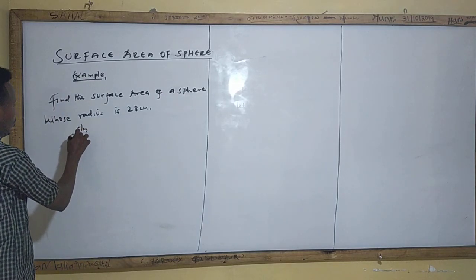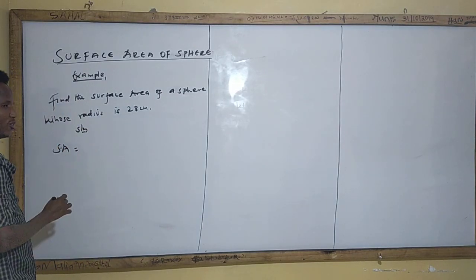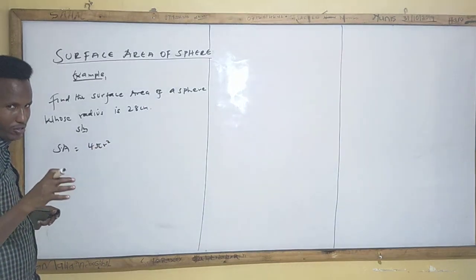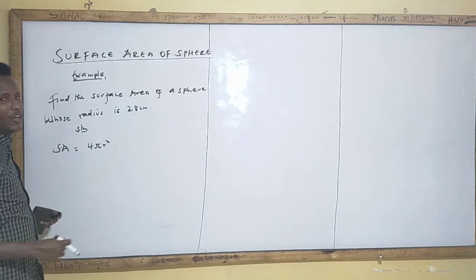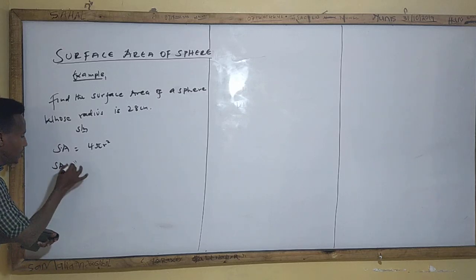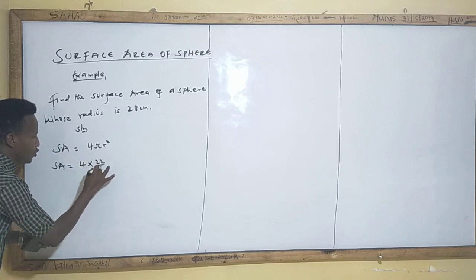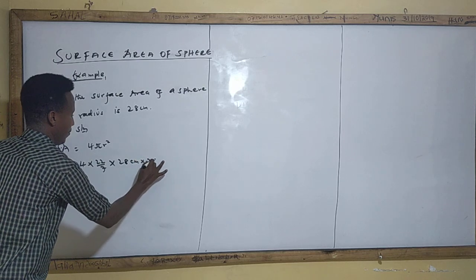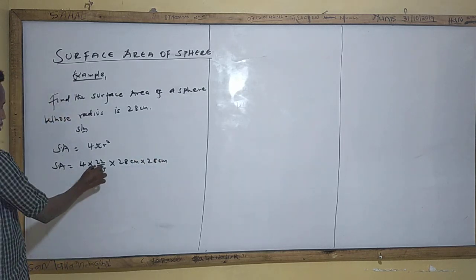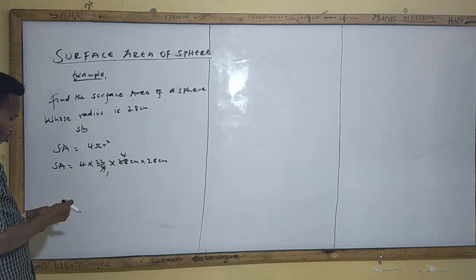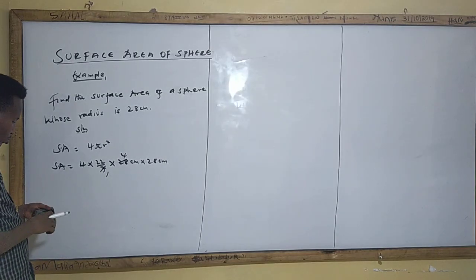Coming to the solution, we know that surface area SA is equal to 4πr². So far we have four concentric circles, then we say 4πr². In this situation, SA therefore is equal to four times π, which is 22/7, times r² which is 28 centimeter times 28 centimeter, because our radius is 28. By the way, 22 divided by 7: 1/7 is 4, so you must have your calculator — don't forget that.